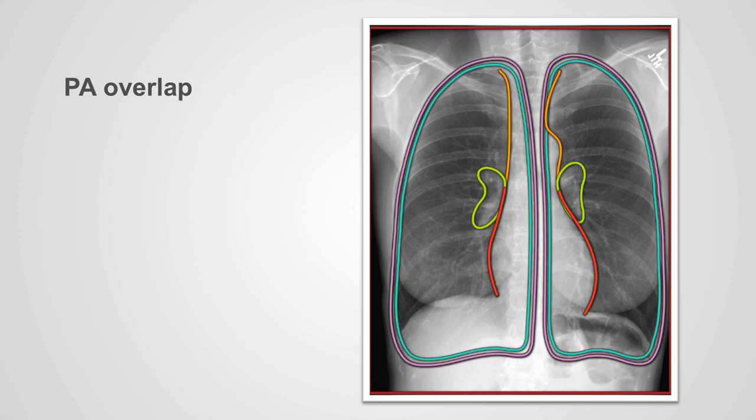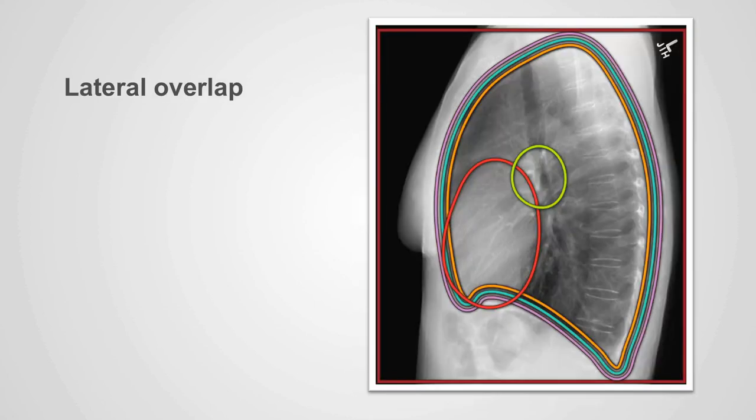The reason the concept of zones is being discussed is because of the overlap of the zones anatomically. When we think that an abnormality may lie within the lungs, it may actually lie within the pleura or within the chest wall. It is important to remember this overlap. On the lateral view, the overlap is even more complex because the mediastinal, pleural, and lung zones overlap completely.